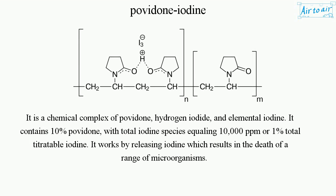It is a chemical complex of povidone, hydrogen iodide, and elemental iodine. It contains 10% povidone, with total iodine species equaling 10,000 ppm or 1% total titratable iodine. It works by releasing iodine, which results in the death of a range of microorganisms.